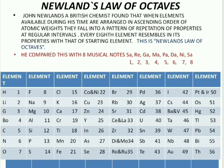The next attempt was made by Newlands, a British chemist. He arranged the elements available in his time in ascending order of atomic weights. He observed that these elements fall into a pattern of repetition of properties at regular intervals. He noticed that every eighth element repeats the properties of the starting element, and he stated this as a law.